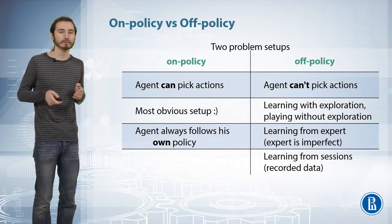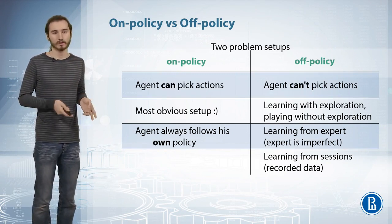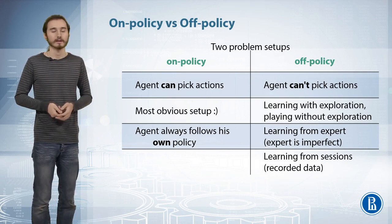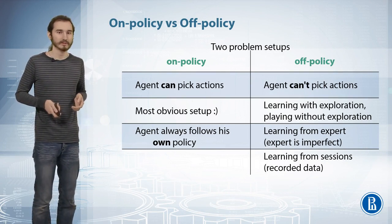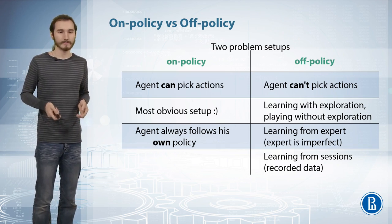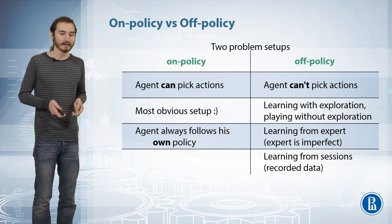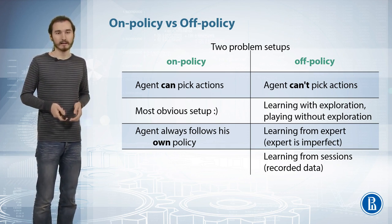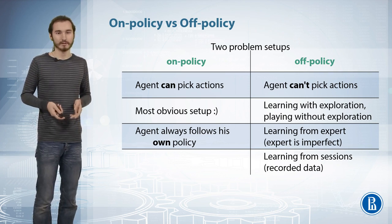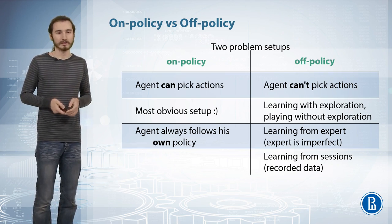This brings us to those two huge families of algorithms, the on-policy and off-policy ones. You might want to remember those terms. Let's recap on how they work, because the main intuition is what we just covered. The on-policy algorithms, like Sarsa, assume that their experience comes from the agent himself, and they try to improve the agent's policy right now on this online step. So the agent plays, then it improves, then it plays again. What you want to do is get the optimal strategy as quickly as possible.